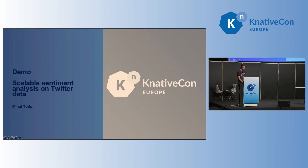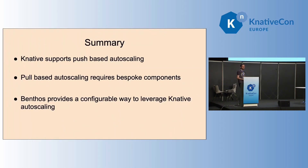In summary: Knative supports push-based autoscaling, but for pull-based autoscaling we require bespoke components. Benthos is one way of doing this — it provides all this functionality for free, it's configurable, and it lets you use many components and write Benthos DSL to transform your messages. It's a Kubernetes-native application that supports all the probes, metrics, and everything that makes it an ideal choice for this kind of workflow.